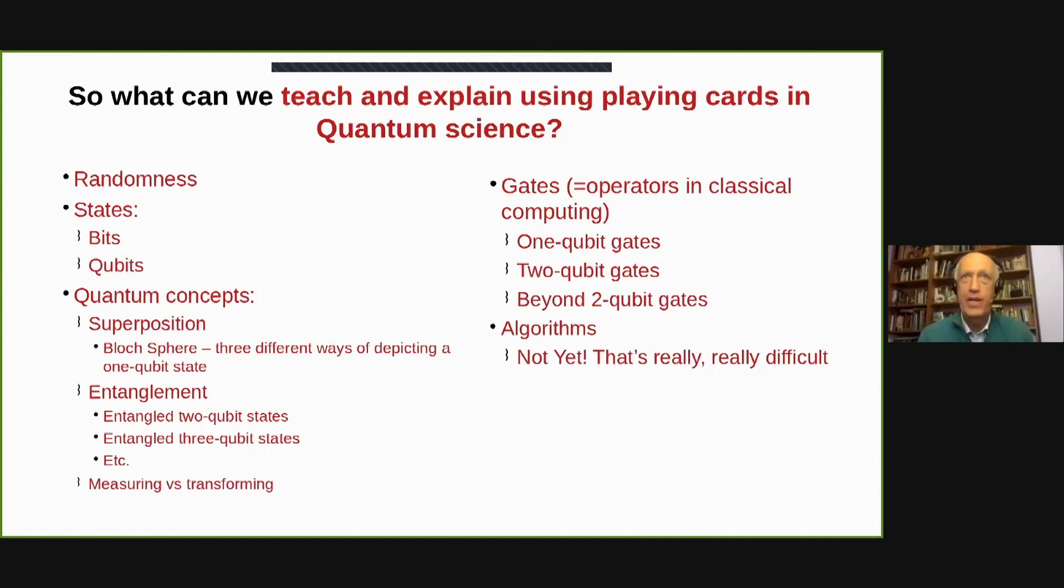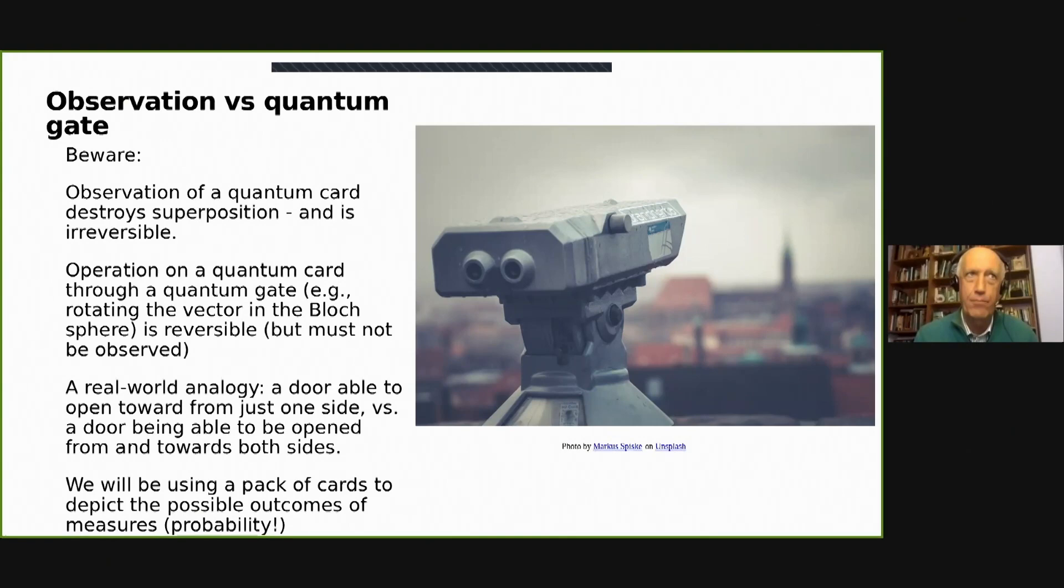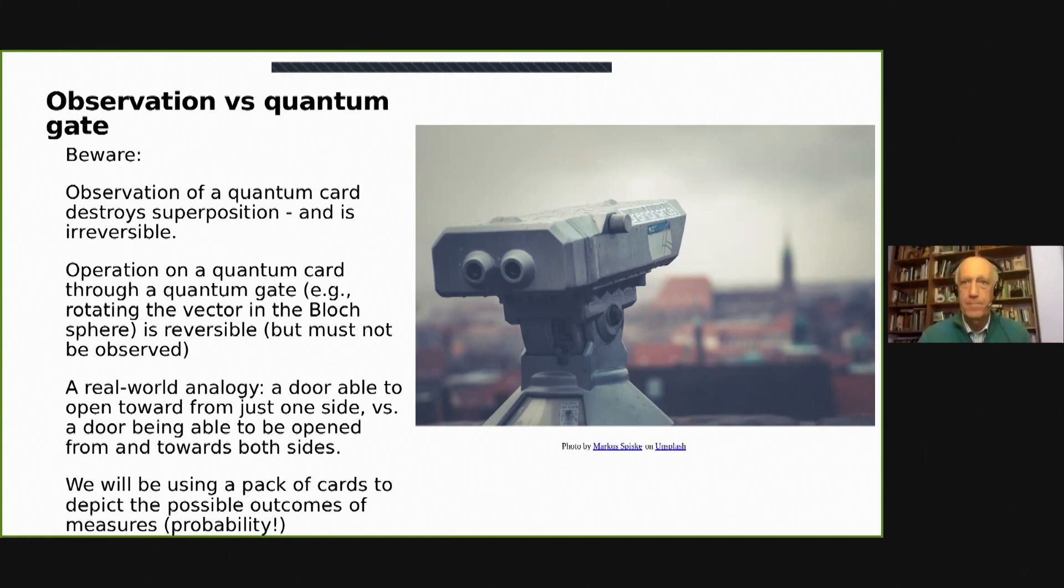We can also teach a little bit about gates. And algorithms are far more difficult. You must understand that quantum science, observating something destroys superposition, is different from using a gate like an operator. Observation destroys superposition and destroys quantum effects.